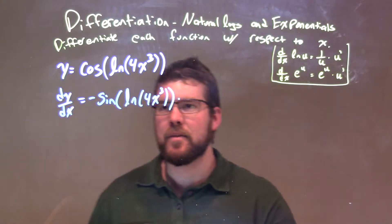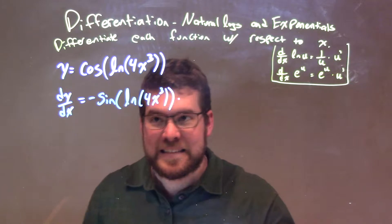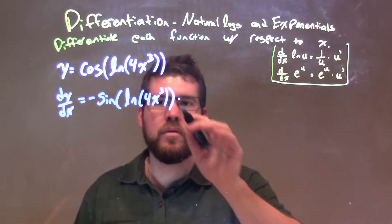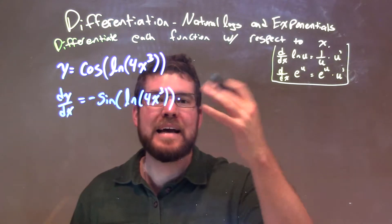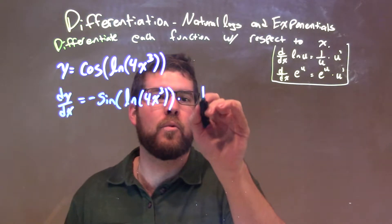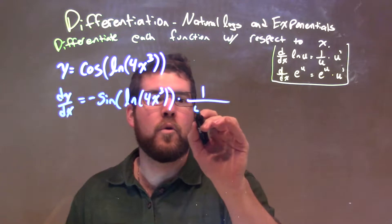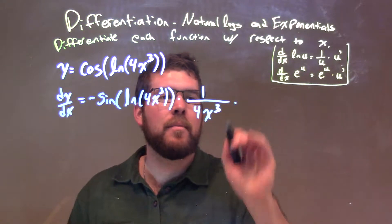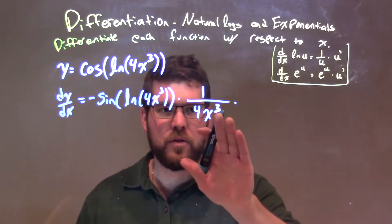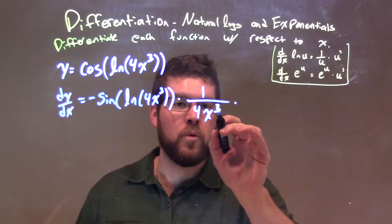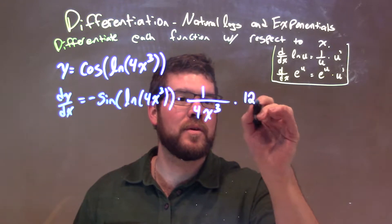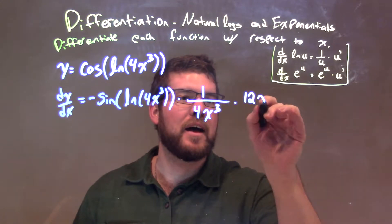Now we're going to take the derivative of the inside. The derivative of the natural log of 4x to the third is 1 over 4x to the third, times the derivative of 4x to the third. So we have 1 over 4x to the third, and we need to multiply that by the derivative of 4x to the third. The derivative of 4x to the third: the power of 3 comes down to multiply by 4, giving us 12, and we have x squared.